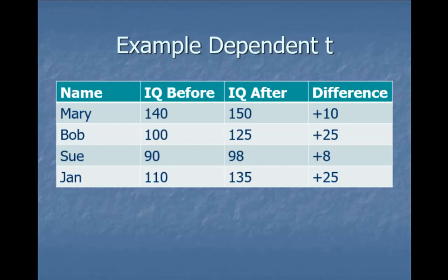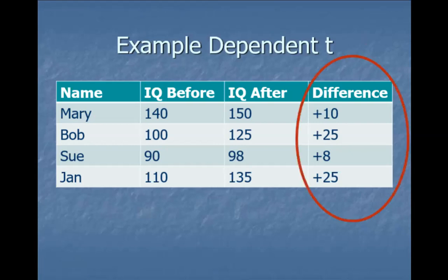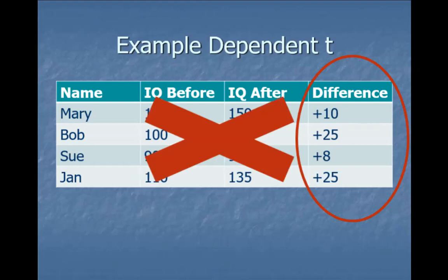If I wanted to sell vitamin K, I'd say: on average, my mean difference in improvement in IQ scores was blank. So we're going to focus on this difference score because that's really where the meat is. I don't care where they started and ended — I really only care what their change was, so I can essentially forget about the original raw data.